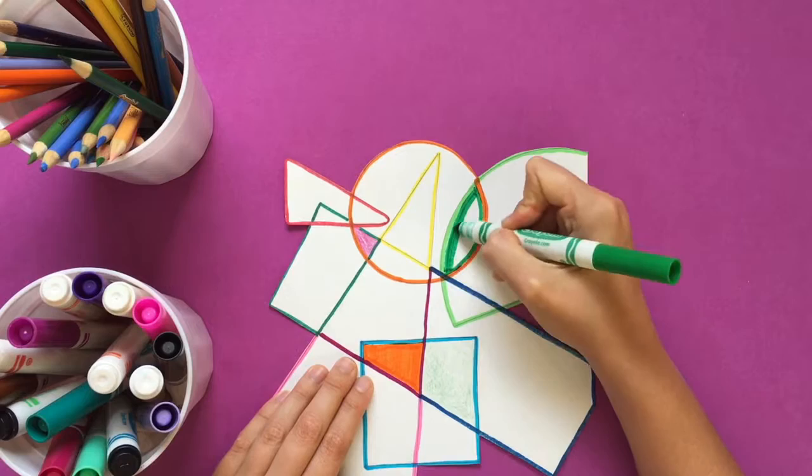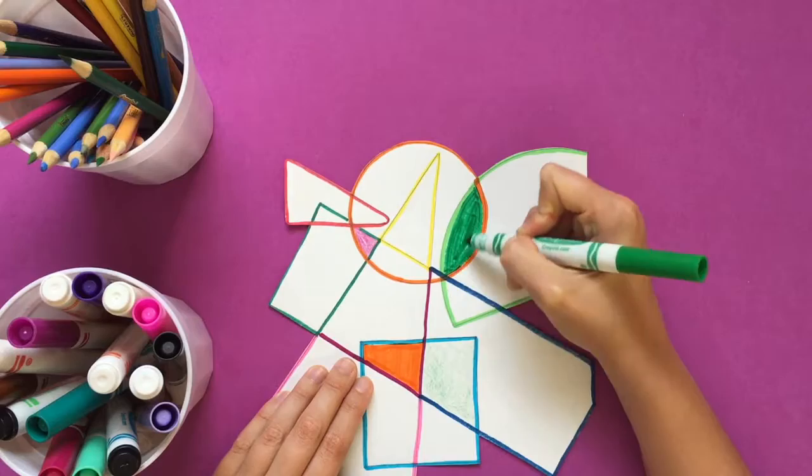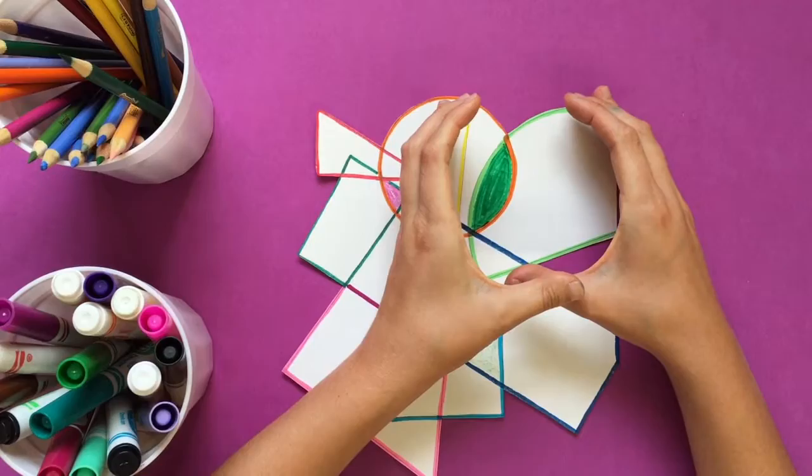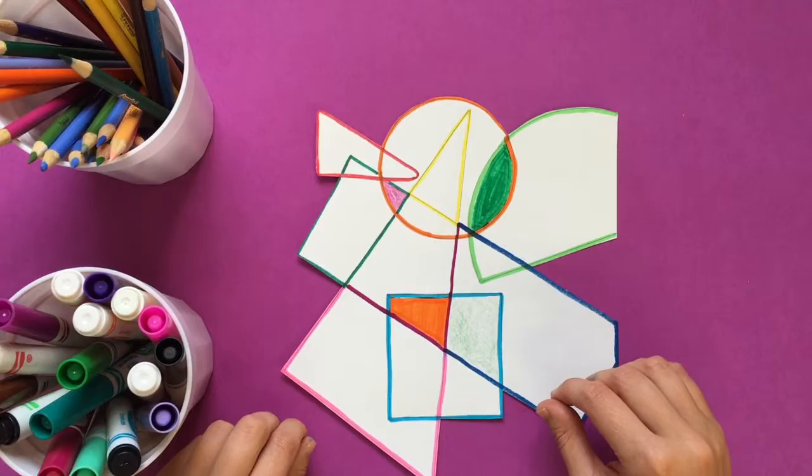You don't want to have all of your positive space on one side and all of your negative space on the other. Try and sprinkle your colored in shapes all over your paper so that by the end of class you'll have a good balance of positive and negative space.